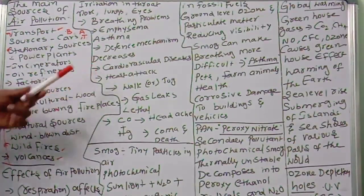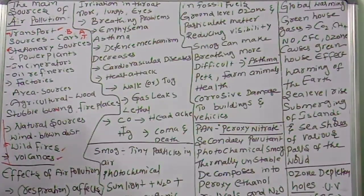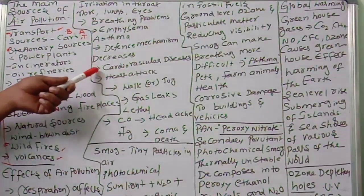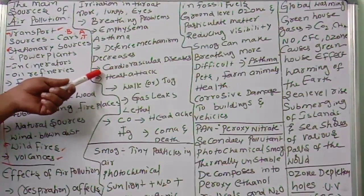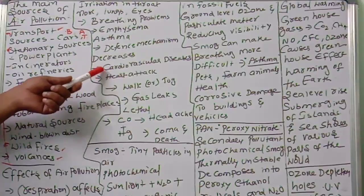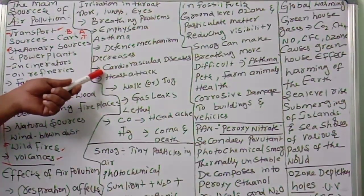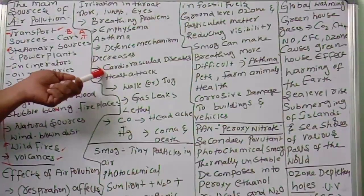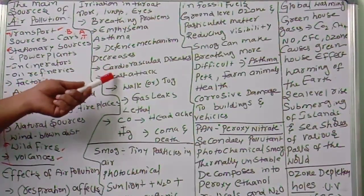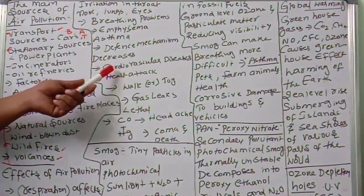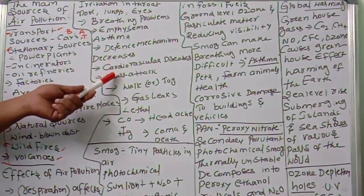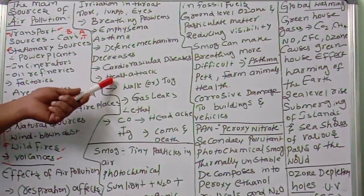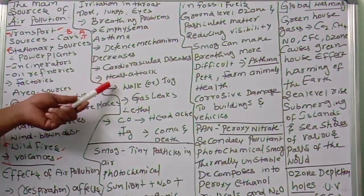Frequent exposure to polluted air increases the risk of cardiovascular diseases and heart-related problems. Breathing air filled with fine particulate matter causes it to accumulate in the arteries and veins. When arteries are blocked, it triggers cardiovascular diseases leading to heart attack. The particulate matter goes from lungs to blood, then accumulates in the arteries that supply blood to body parts, affecting the heart system.